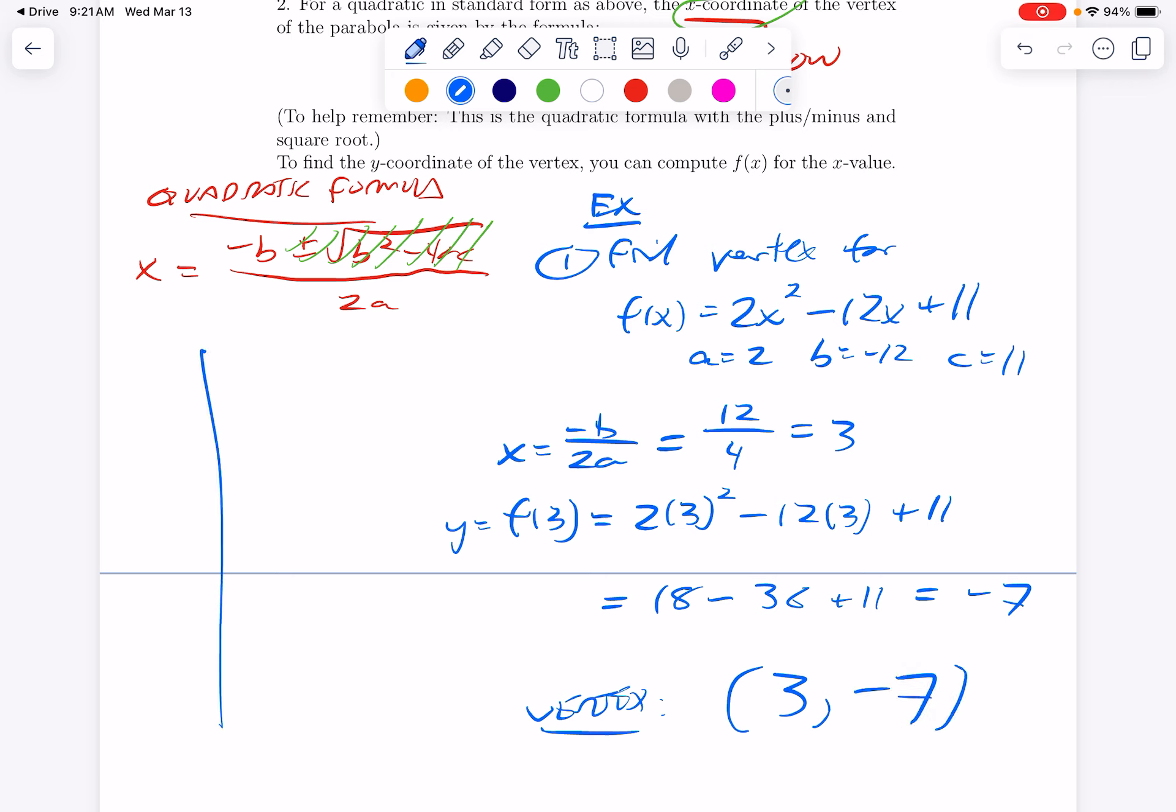It opens upward. So a very rough picture of what this would look like is here is my vertex at 3 negative 7, and I have a parabola that opens upward, and then it's kind of steep. My parabola opens upwards, but it's kind of steep because a is equal to 2.